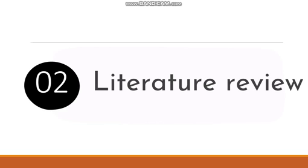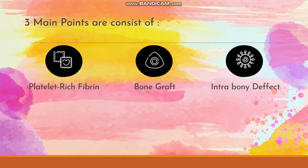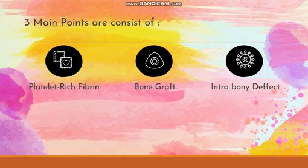We now enter segment two about the literature review. In this segment, I will discuss three main points: the first one is platelet-rich fibrin, the second one is bone graft, and the last one is intrabony defects.